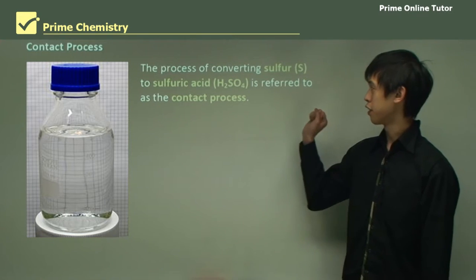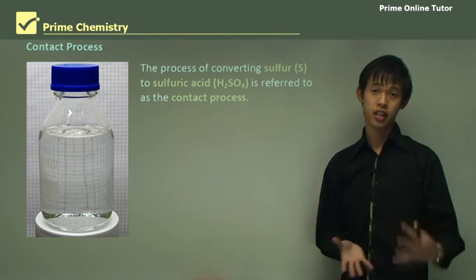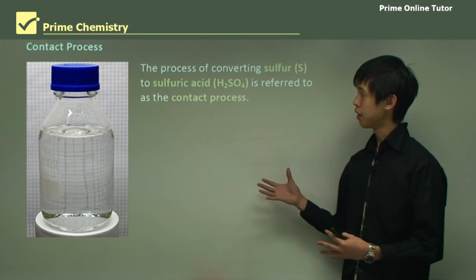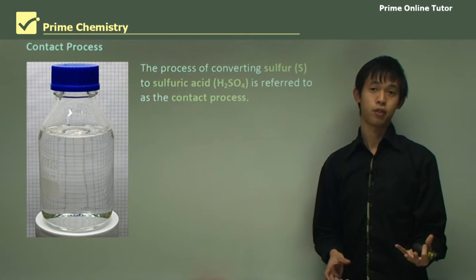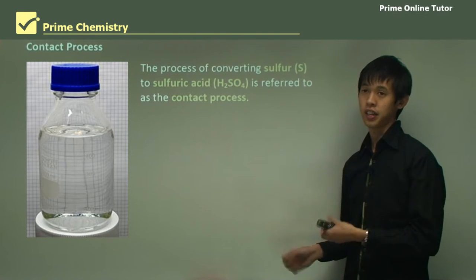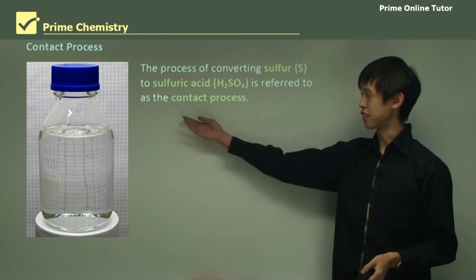The process to convert sulfur to sulfuric acid is essentially what we call the contact process. We're turning this elemental sulfur that we've just dug out of the ground with the Frash process and turning it into sulfuric acid through this contact process.